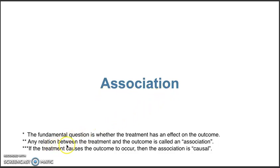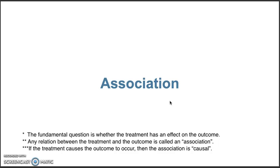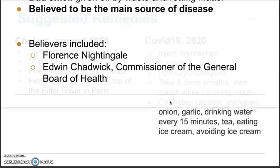The relation between treatment and outcome exists, but whether the treatment really caused the outcome is not 100% confirmed. That's the example of association. John Snow continued to do more research, and we will see whether this association will become causal in the next part.